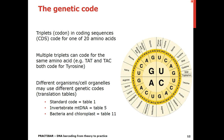In coding sequences, three-letter codes or triplets, also called codons, code for one of the 20 amino acids. Multiple triplets can code for the same amino acid — for instance, TAT and TAC both code for the amino acid tyrosine. It is important to note that different organisms or different cell organelles may use different genetic codes or translation tables. The standard code is referred to as Translation Table 1. In plant health, we often work with mitochondrial DNA loci, and one code frequently applied is the Invertebrate Mitochondrial DNA Code, Table 5. The Bacteria and Chloroplast Code, Table 11, is also frequently used.